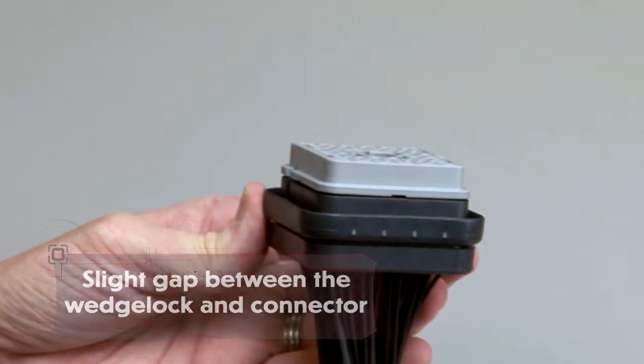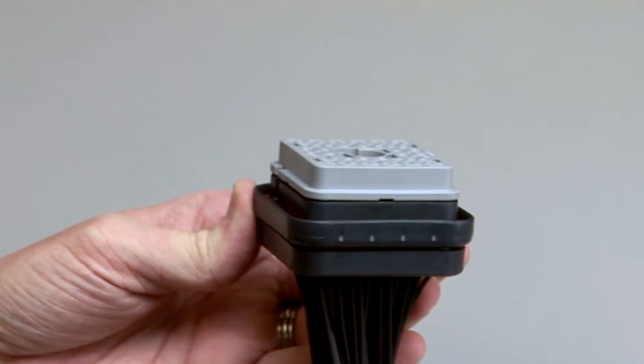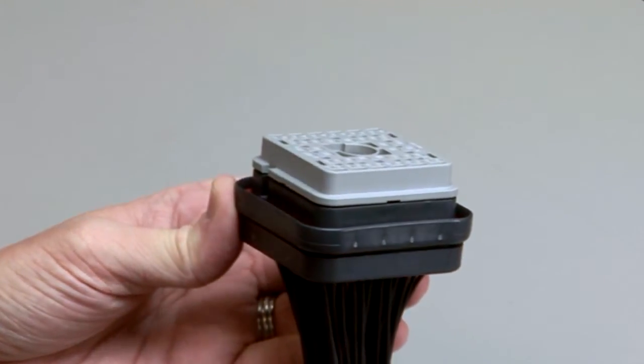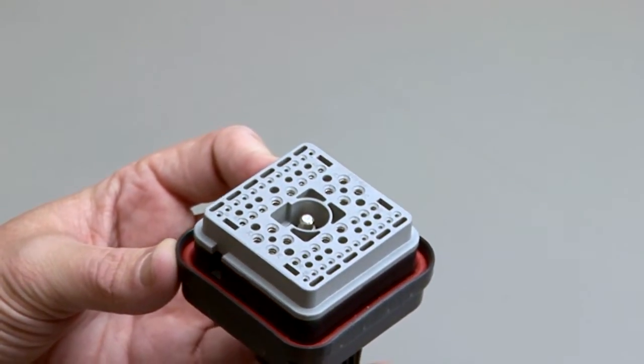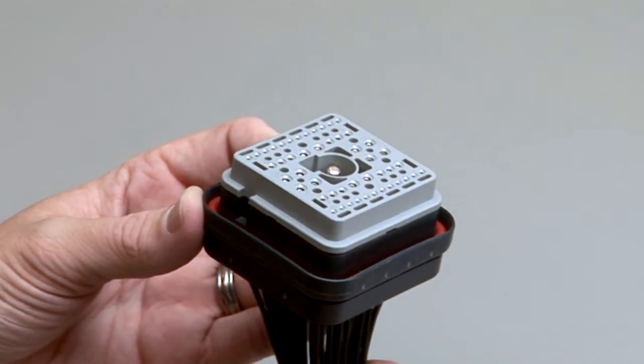If the wedge lock will not go all the way in, check to make sure all of the contacts are properly seated. If a contact is not fully inserted, the retention finger will prevent the wedge lock from pressing into place.